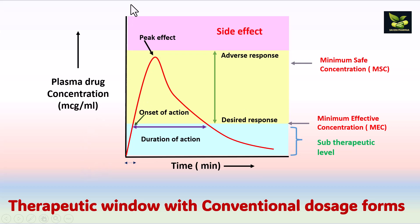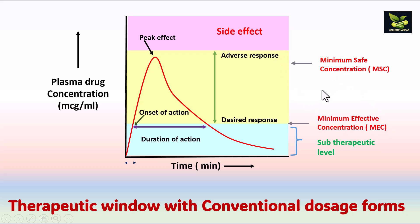This important graph shows plasma drug concentration versus time — the therapeutic window with a conventional dosage form. After a lag time, absorption begins, marking the onset of action. The complete duration is the duration of action. Maximum concentration is C-max. The absorption curve is followed by an elimination curve. The minimum effective concentration (MEC) and minimum safe concentration (MSC) define the therapeutic window. Above the MSC is the adverse response region where side effects occur.